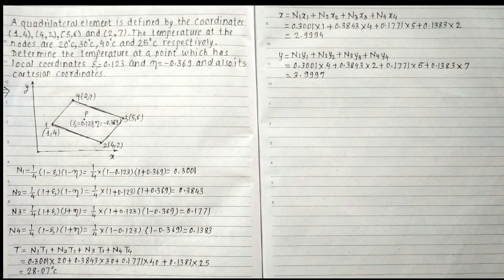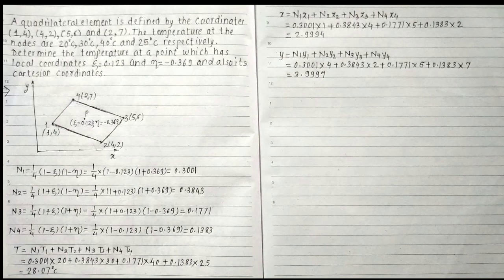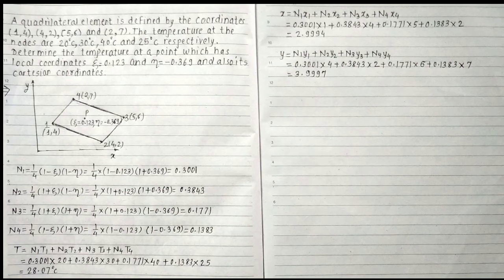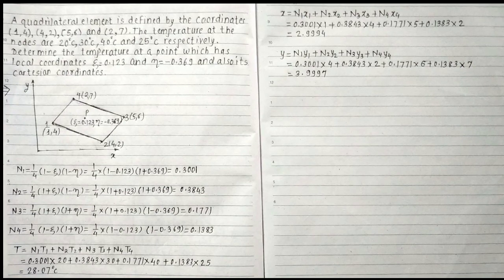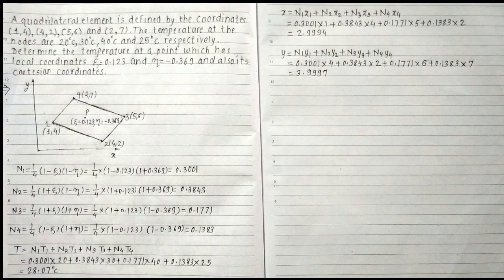I will calculate the y-coordinate as y = N1·Y1 + N2·Y2 + N3·Y3 + N4·Y4, which equals 0.3001×4 + 0.3843×2 + 0.1771×6 + 0.1383×7. So y is equal to 3.99997. Thank you for watching the video.